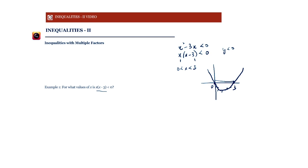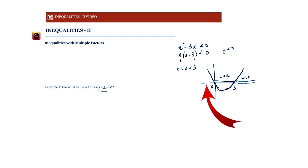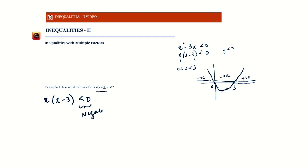Notice that y is positive for x outside the roots, negative between them, and positive again beyond. This leads us to the wavy line or wavy curve method. Assume we have x(x minus 3) less than zero. Think of 'less than zero' as meaning negative — we want this expression to be negative.